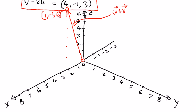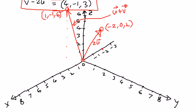The second point is 2 times vector u, which came out as (negative 2, 0, 2). Negative 2 is on the negative x-axis, the y value is 0 so there is nothing on the y-axis, and we go up 2 units on the z-axis. We draw a line from the origin to that point, and the terminal point at (negative 2, 0, 2) represents 2 times vector u.